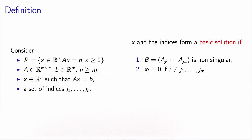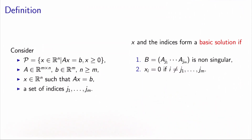We say that the vector x, together with the set of indices, form a basic solution if two things happen. First, the columns of the matrix A corresponding to the set of indices, put together, form a matrix B — which we call the basis matrix — that is non-singular. That is, the columns of the matrix must be linearly independent. And then the components of x that are not in the basis must all be equal to zero.